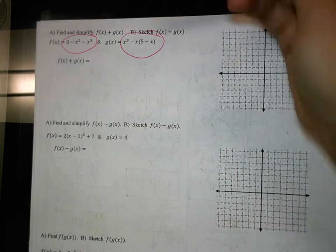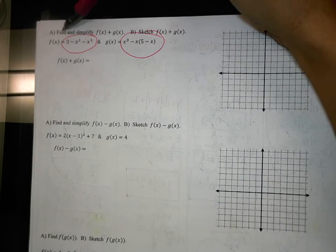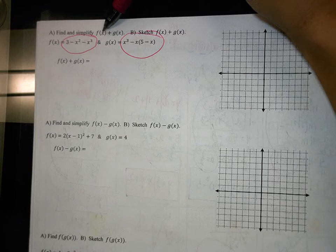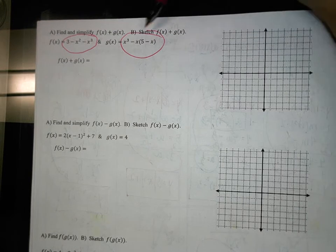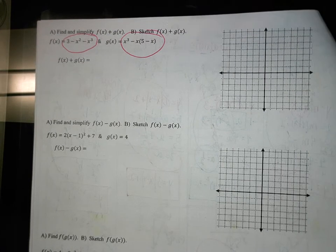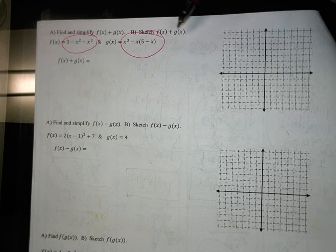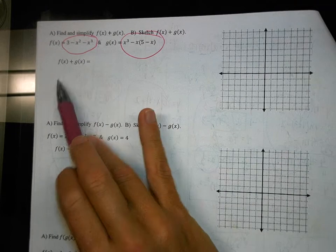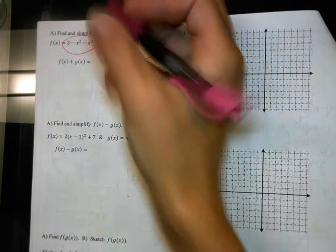So this is the back side of the notes. These instructions here say find and simplify f of x plus g of x and then sketch that result. They're saying sketch them once you add them. So f of x plus g of x, all we're going to do is add these together.